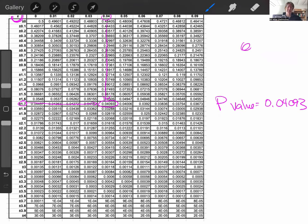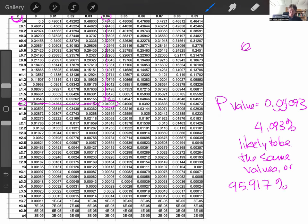That is how we find the p-value, and that means that these two values are 4.093% likely to be the same values. Or 95.917% likely to be different values.